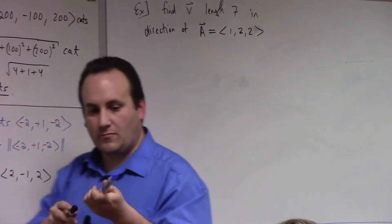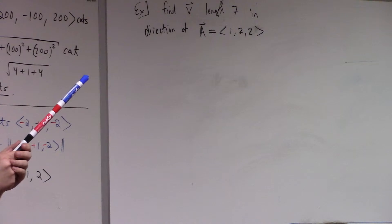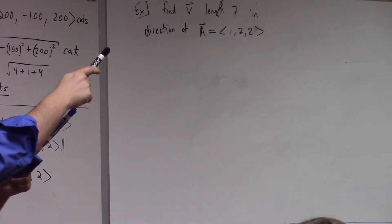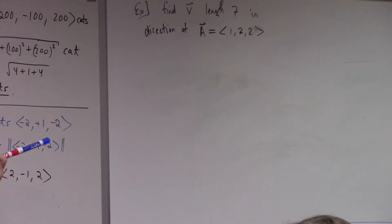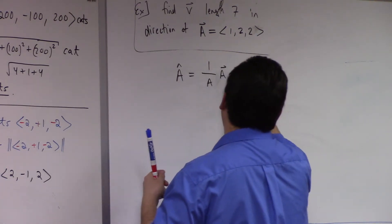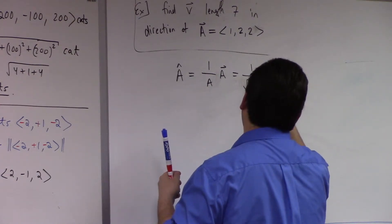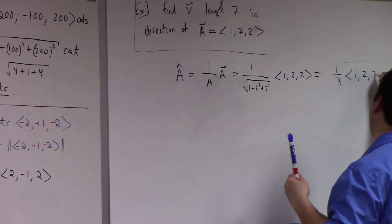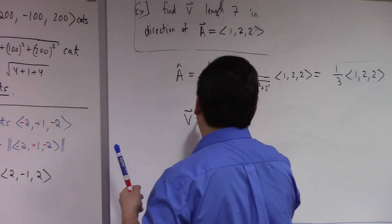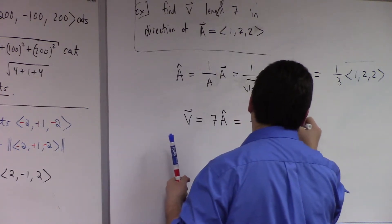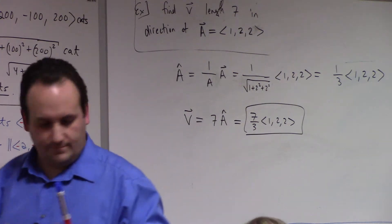So here's A, but I want a vector that has length 7. What I really want is just 7 of these. So all I have to do is calculate A hat and multiply by 7. And that's my answer. So what's A hat? It's 1 over |A| times A, so that's 1 over the square root of 1 plus 2 squared plus 2 squared, times (1, 2, 2). That's 1 third times (1, 2, 2). So my V by geometry is 7 times A hat, which is 7 thirds times (1, 2, 2). There you go.